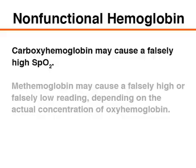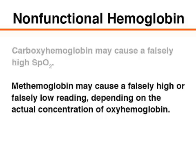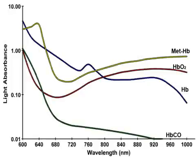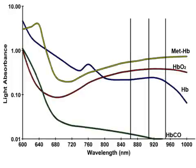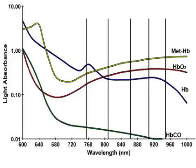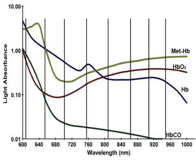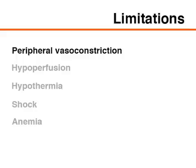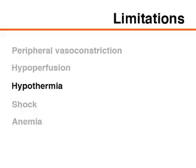Carboxyhemoglobin may cause a falsely high SpO2, whereas methemoglobin may cause a falsely high or falsely low reading, depending on the actual concentration of oxyhemoglobin. Newer pulse oximeters are able to emit light at up to eight different wavelengths, making it possible for the oximeter to distinguish carboxyhemoglobin and methemoglobin. There are additional limitations: peripheral vasoconstriction, hypoperfusion, hypothermia, shock, and anemia may also yield inaccurate results.